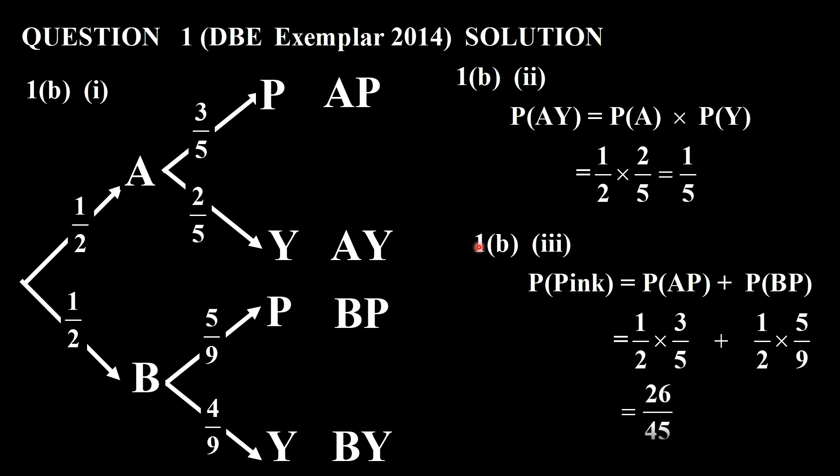And the next question is the probability of getting a pink. Where do we get pink? Can you see there we get pink there? And there we get pink. So there are two branches. So it's along this branch here, AP. So that's half times 3 over 5. And then along this branch here, it's again half times 5 over 9. If I do that little bit of calculation, it comes out as 26 over 45.